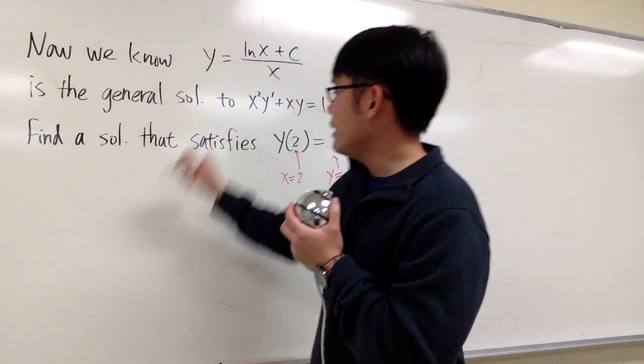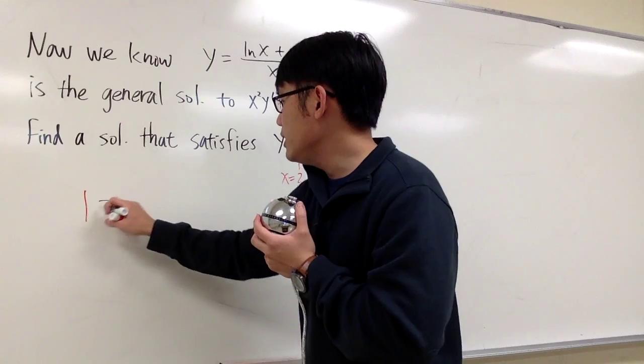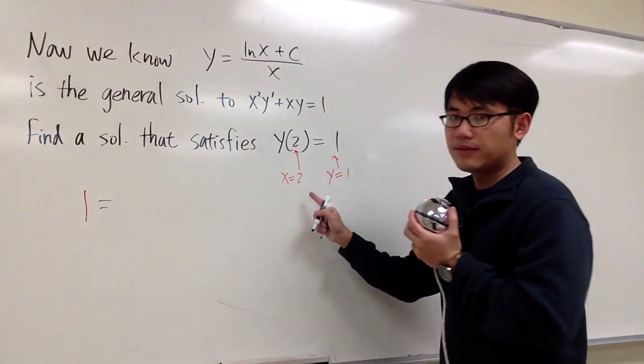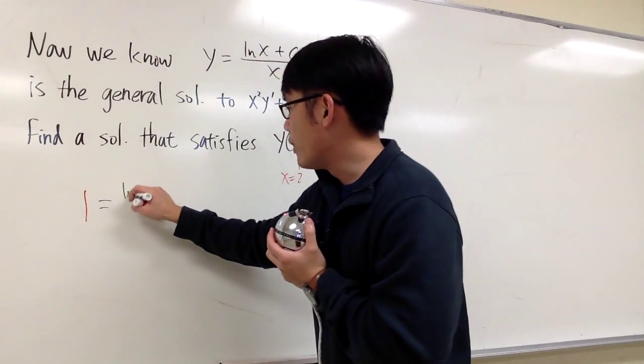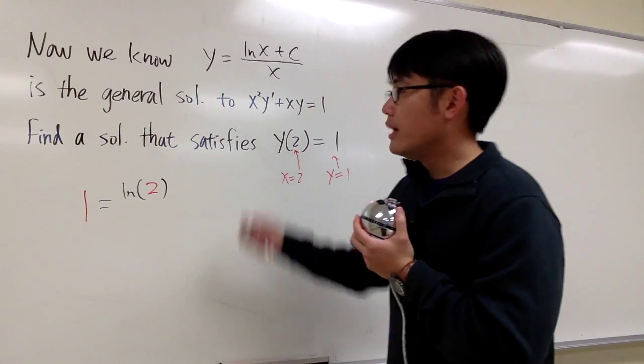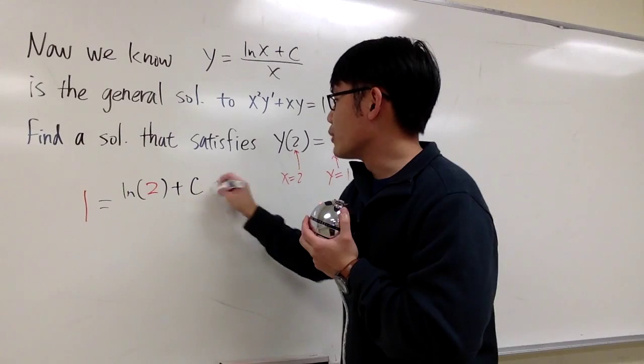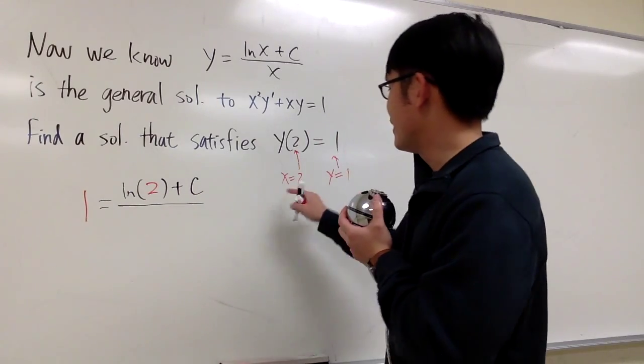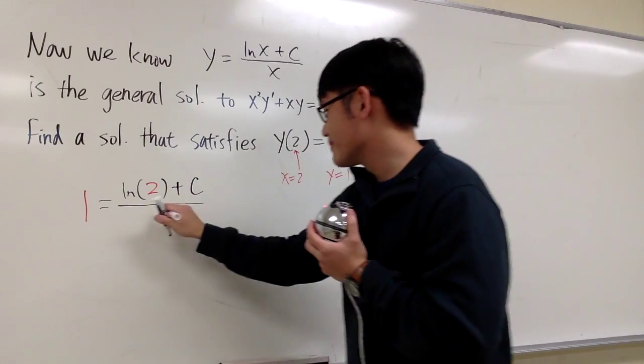Plug in 1 for y, so we have 1, and that's equal to ln, and the x value is 2. So we have ln, and then put parentheses to emphasize that 2 is inside of ln, and then the c is outside, over we have the one more 2 on the bottom, like that.